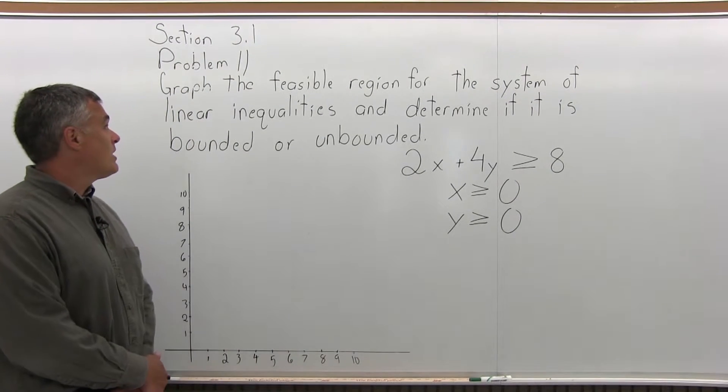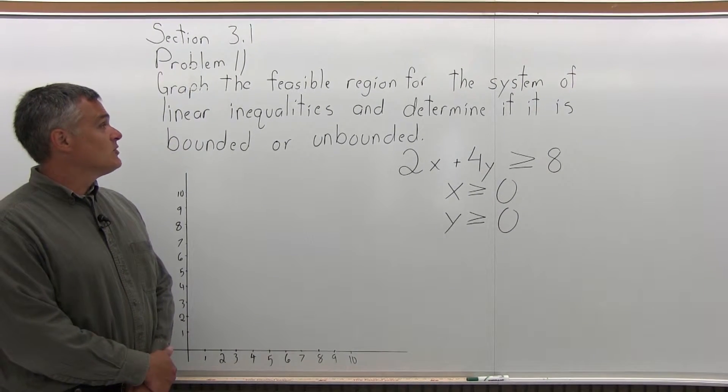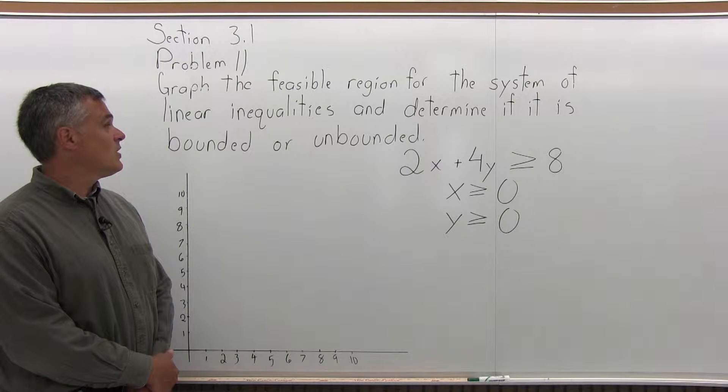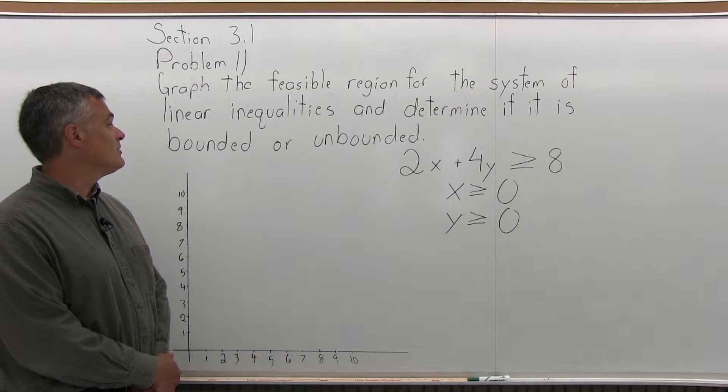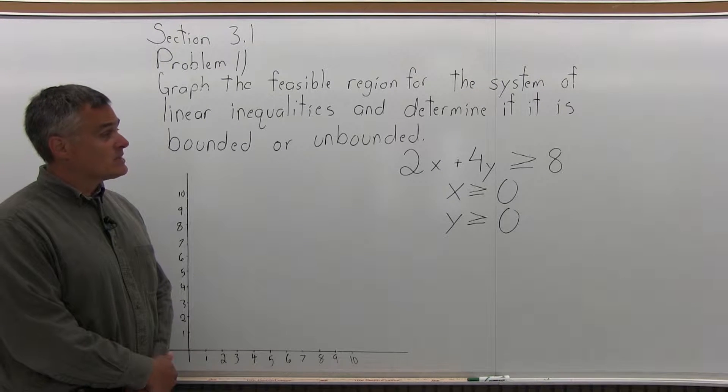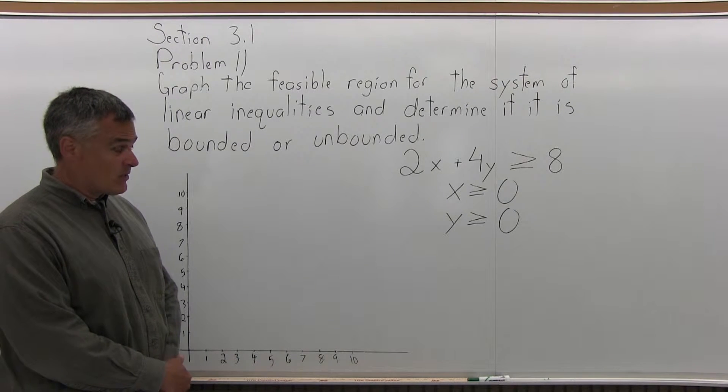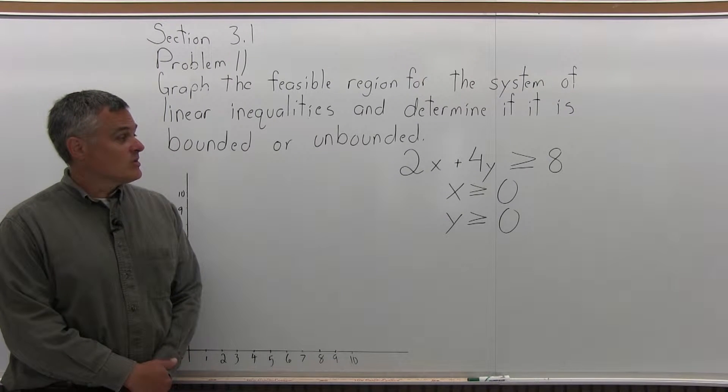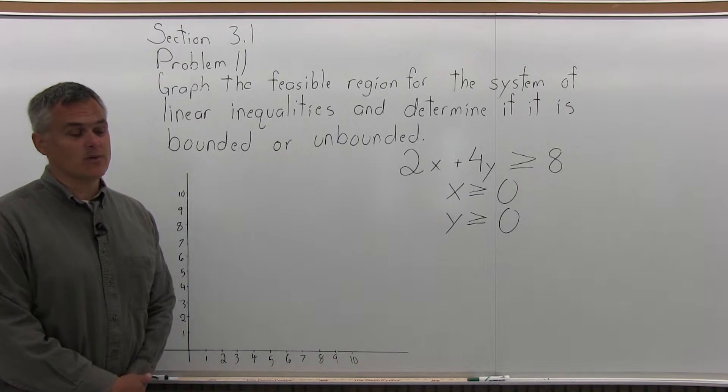This is Section 3.1, Problem 11. It says, graph the feasible region for the system of linear inequalities and determine if it is bounded or unbounded. We have 2x plus 4y is greater than or equal to 8, x is greater than or equal to 0, and y is greater than or equal to 0.